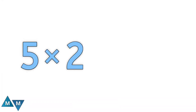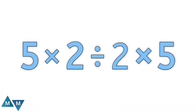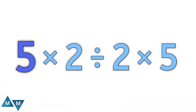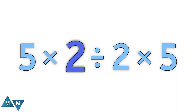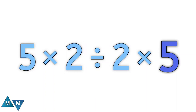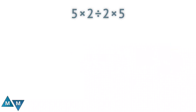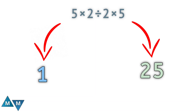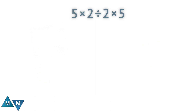Hi guys, look at this problem. The problem is 5 multiplied by 2 divided by 2 multiplied by 5. What does this equal? Opinions on its value vary. Some assert it equals 1, while others assert it equals 25. Let's see step by step how to solve it. But first, try to solve it yourself and comment below.